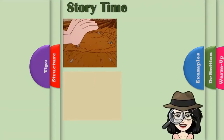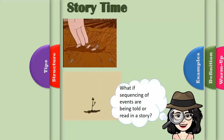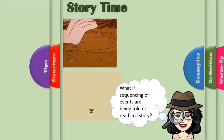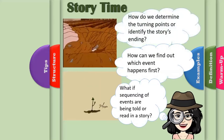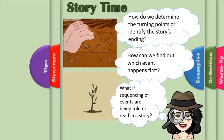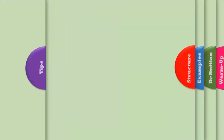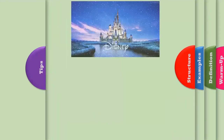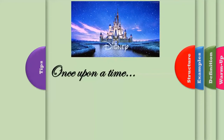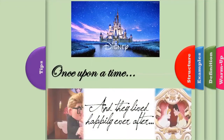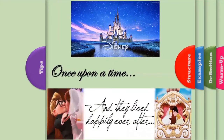But what if sequencing of events are being told or read in a story? How can we find out which event happens first? And how do we determine the turning points or identify the story's ending? Do you remember reading a fairy tale, and how you would feel the magic when you start the story with the famous opening line 'Once Upon a Time'? And the anticipated ending, 'And They Lived Happily Ever After'?